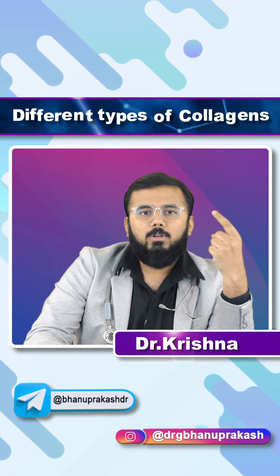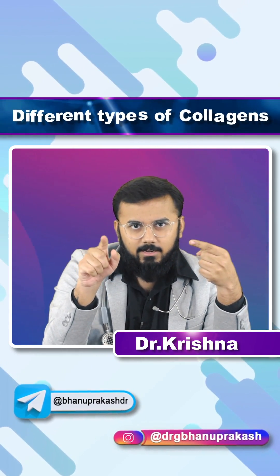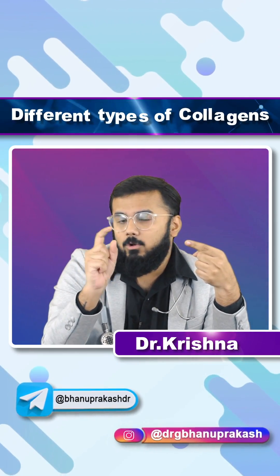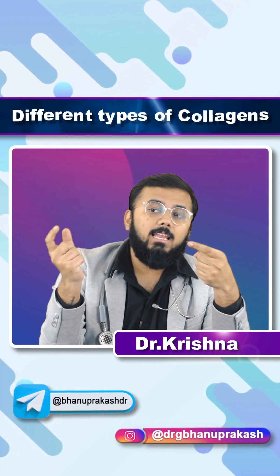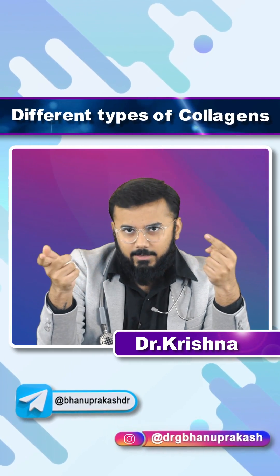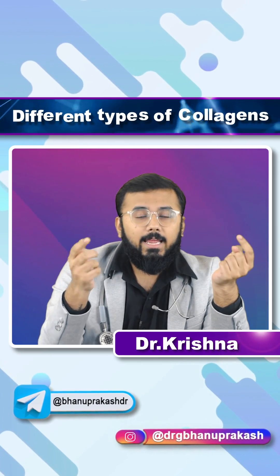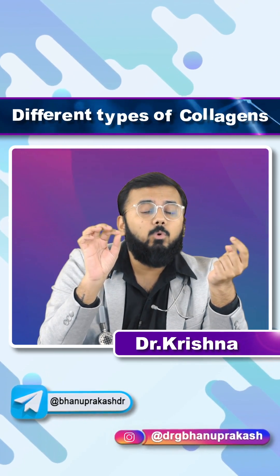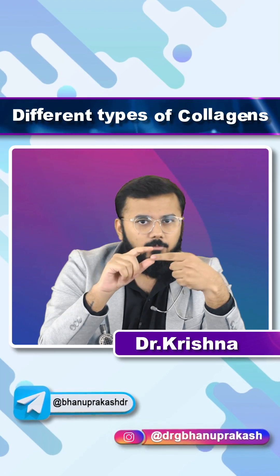If you talk about type 1, '1' is O-N-E. The last letters of 'bone' spell O-N-E, and the last three letters of 'tendon' are also O-N-E. So bones and tendons — most commonly, 90% of your bones and tendons contain type 1 collagen.